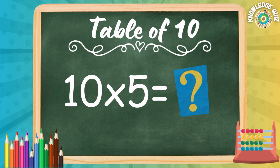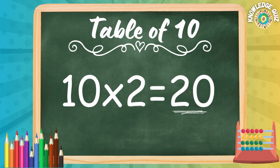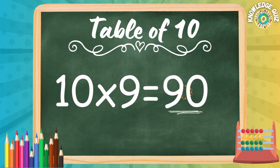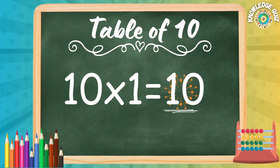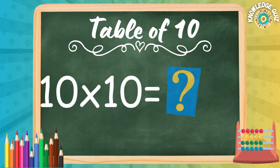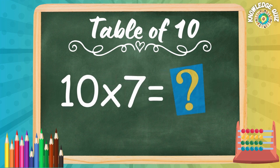10 fives are... 50. 10 twos are... 20. 10 nines are... 90. 10 ones are... 10. 10 threes are... 30. 10 tens are... 100. 10 sevens are... 70.